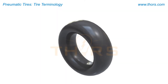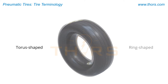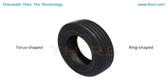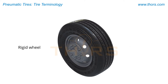At its most basic, a tire is typically a torus-shaped or ring-shaped device that is fitted onto a rigid wheel to act as a cushioning interface between the vehicle and the surface on which the vehicle travels.